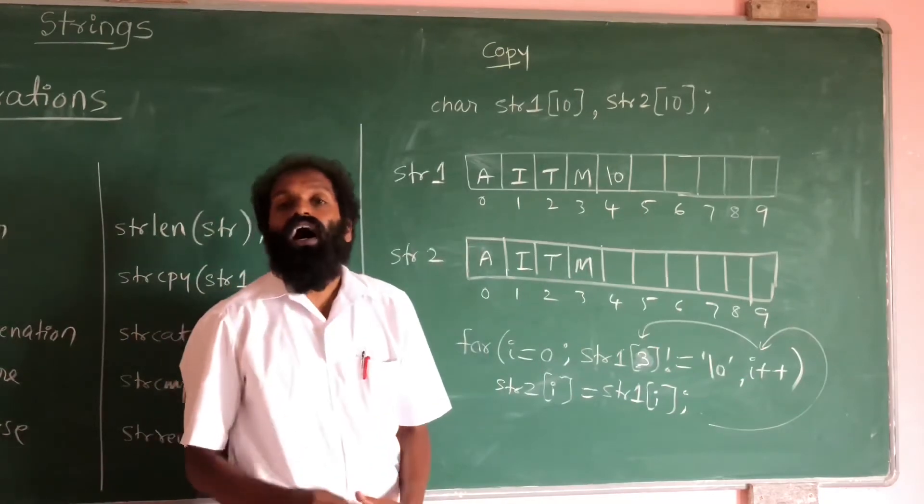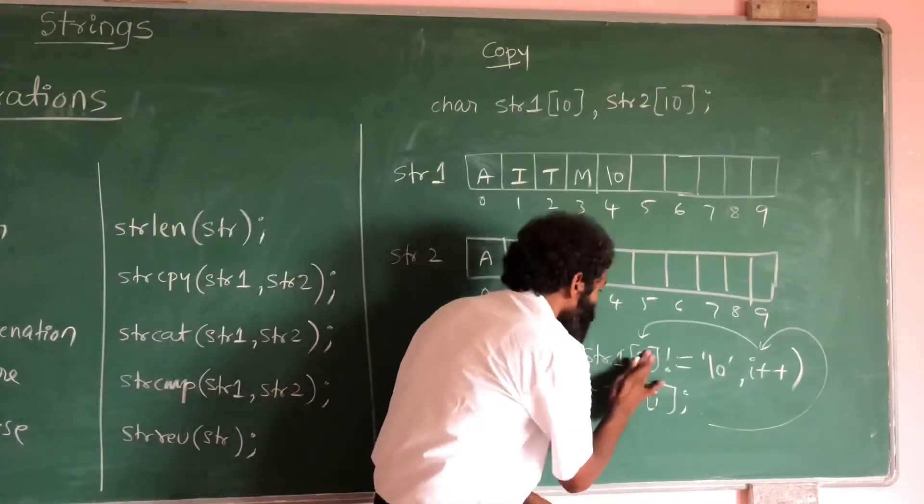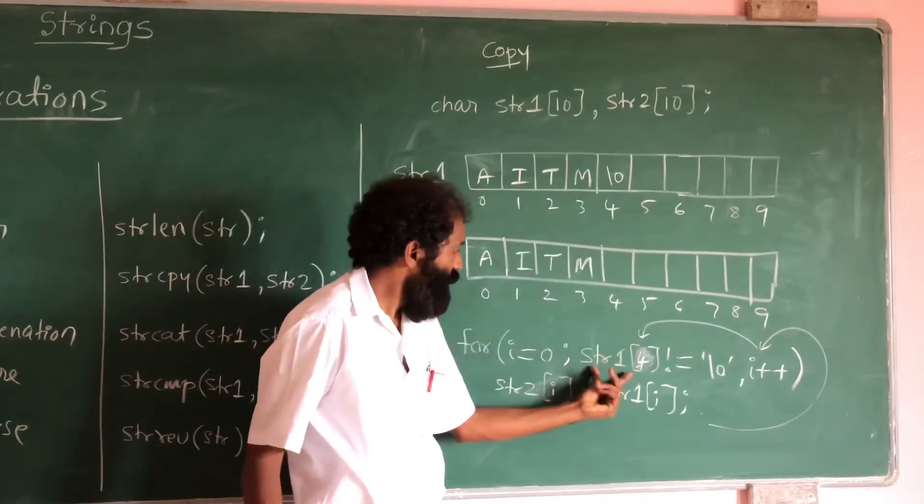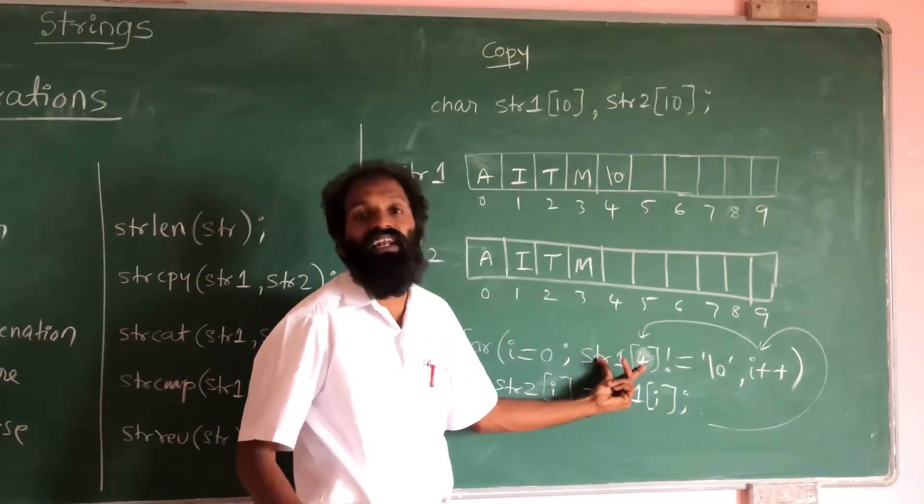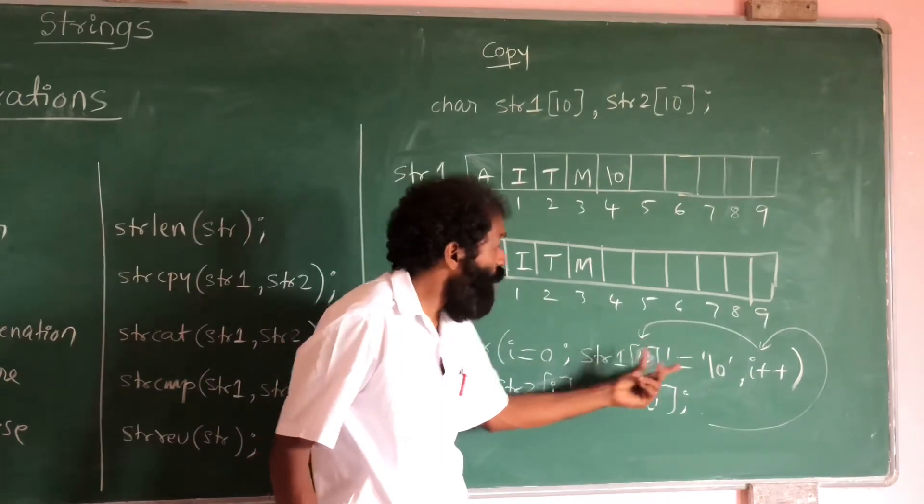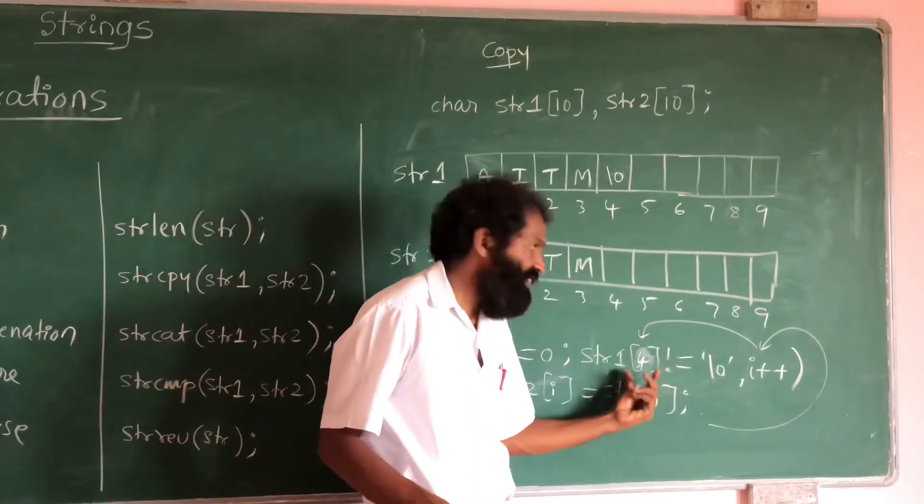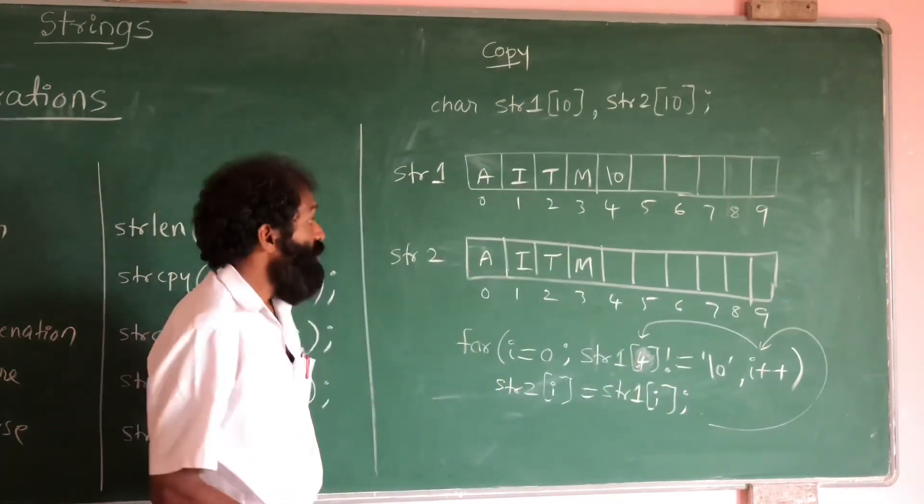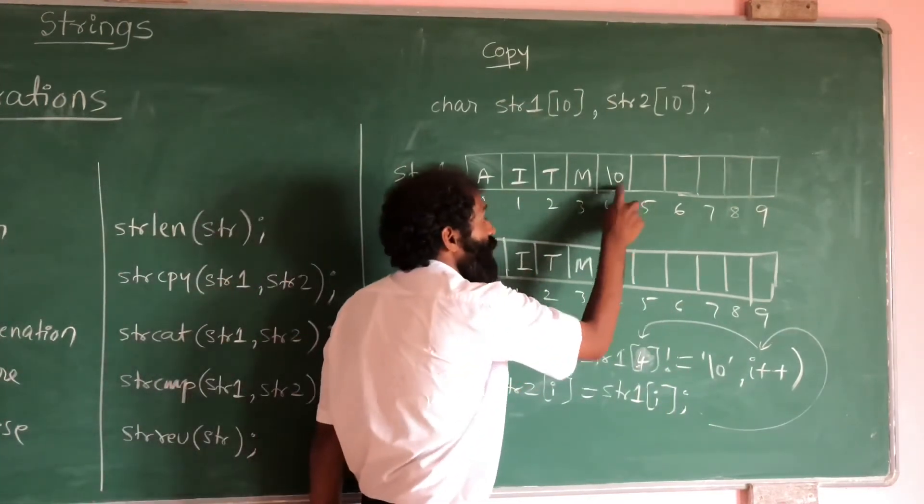Now I value becomes 4. When it is 4, it means it is a null character. String 1 of 4 means null character. Null character is not equal to null means actual null character is equal to null character. Condition fails. Comes outside. See, now we have to store this null character here.